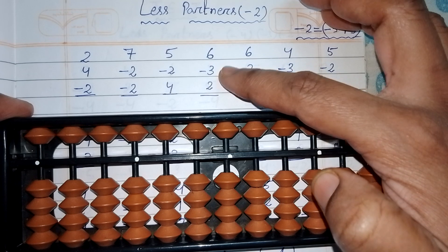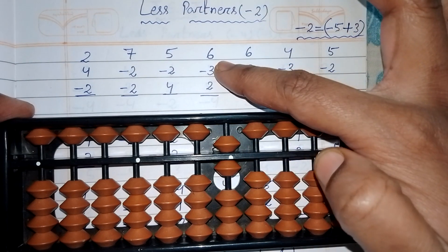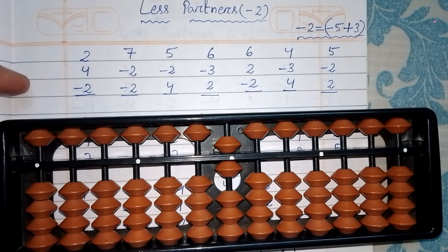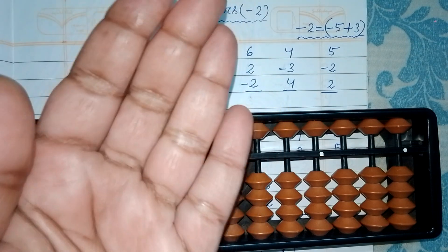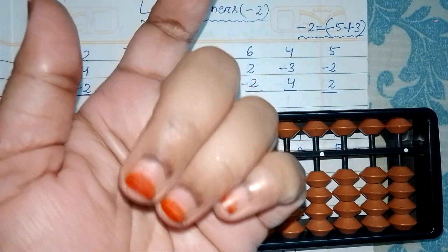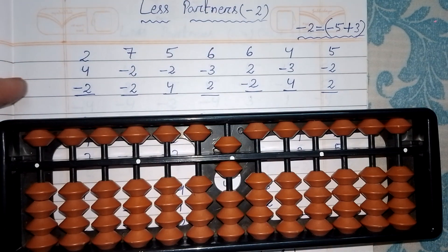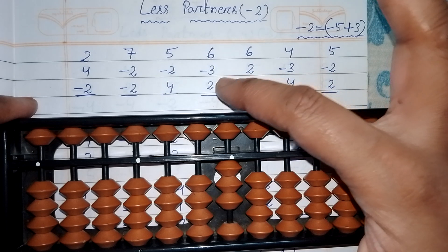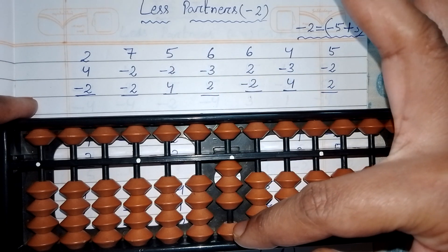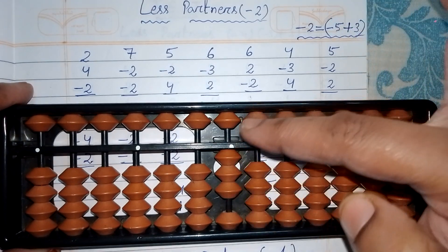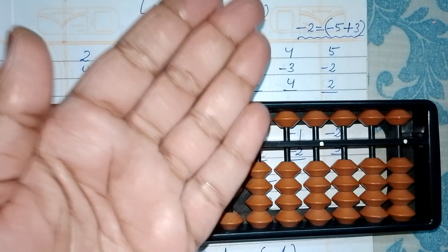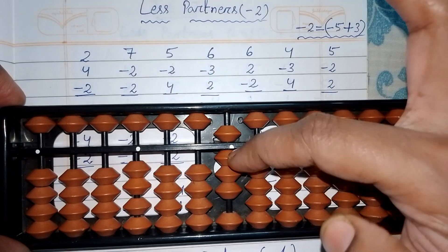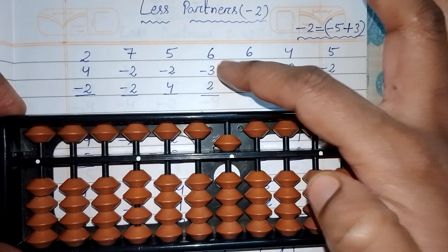Fourth question: 6-3+2. Adding six. For less three, we don't have three bits for subtraction — partner of less three: open five fingers, close three, two fingers left, so partner is two. Push up five, push up two. For adding two: partner of two is three — close two fingers, three left — so pull down five and pull down three. Answer is five.